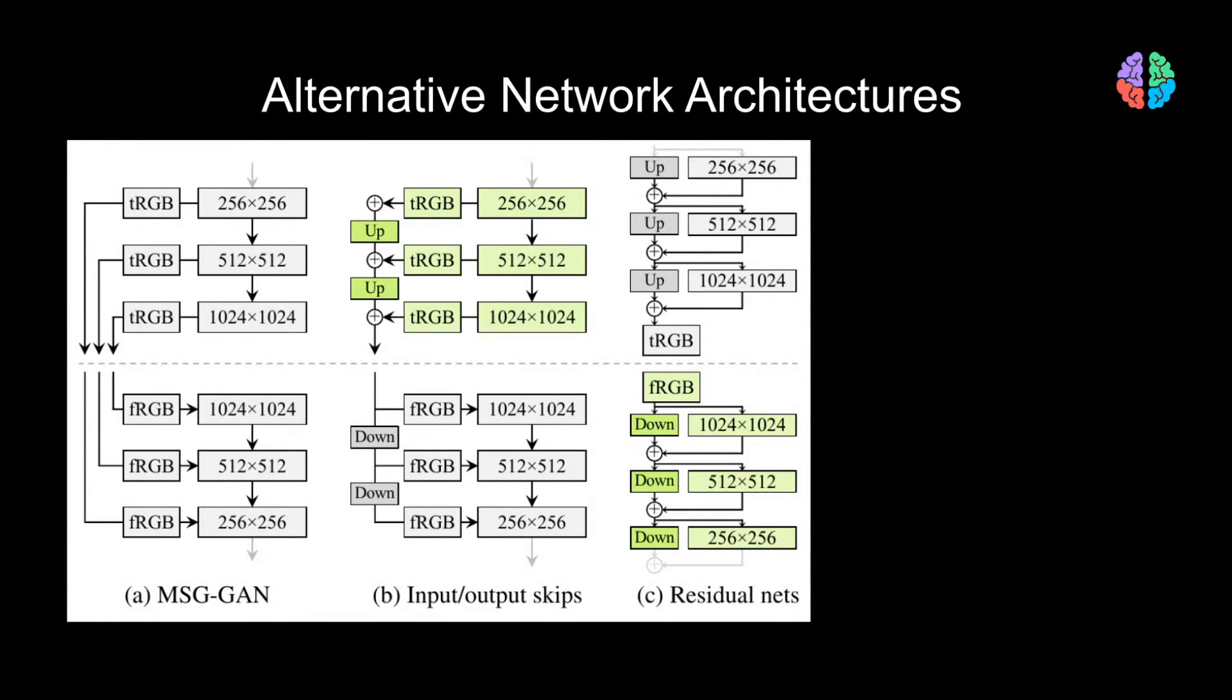First is to simply use skip connections from the generator to the discriminator. Second is to have a single skip connection from the generator to discriminator with up and down samplings. The third is to have residual connections in both the generator and the discriminator.